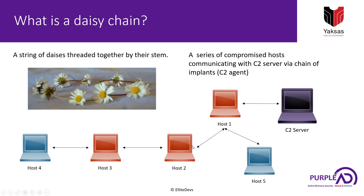If we want to expand it further, we can create another daisy server on host two and let host three talk to it, then create another daisy server on host three and let host four talk to that. In this way, via this chain, our command and control server can execute commands on host four without communicating directly with it.